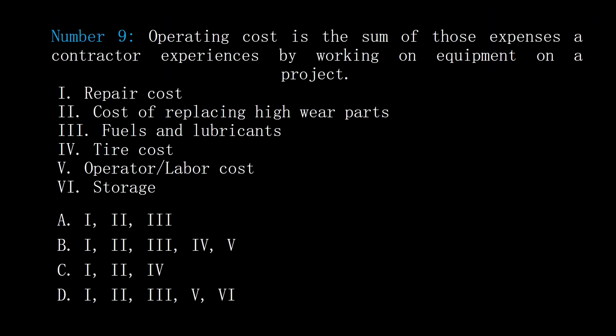Number 9. Operating cost is the sum of those expenses a contractor experiences by working on equipment on a project: 1. Repair cost. 2. Cost of replacing high wear parts. 3. Fuels and lubricants. 4. Tire cost. 5. Operator labor cost. 6. Storage. A: 1, 2, and 3. B: 1, 2, 3, 4, and 5. C: 1, 2, and 4. D: 1, 2, 3, 5, and 6. Answer: B, 1, 2, 3, 4, and 5.